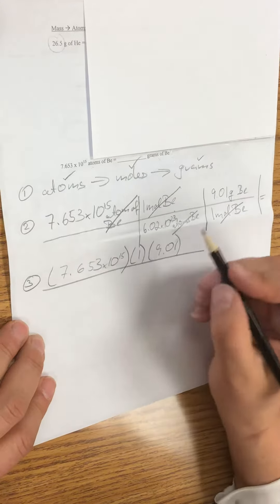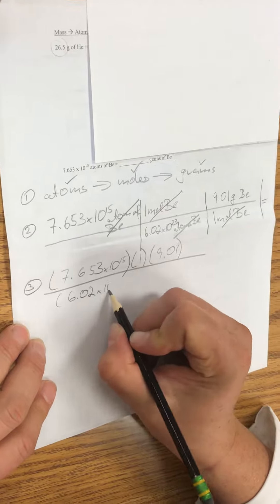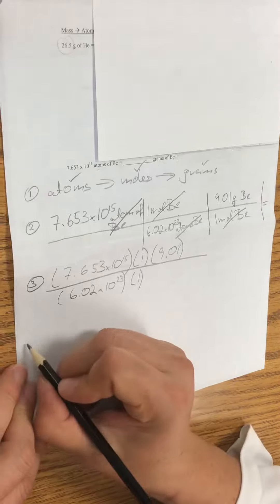And you divide everything by 6.02 times 10 to the 23rd and of course times 1 here.